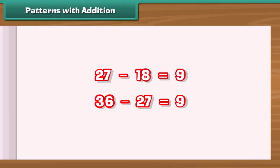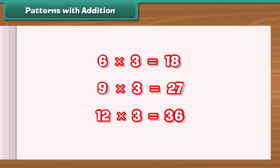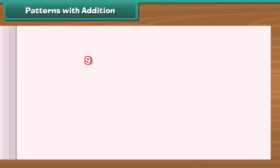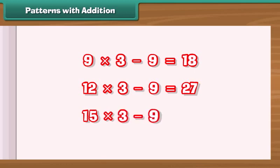There is another interesting fact. Each sum is thrice the middle term: 6 times 3 is 18, 9 times 3 is 27, and 12 times 3 is 36.